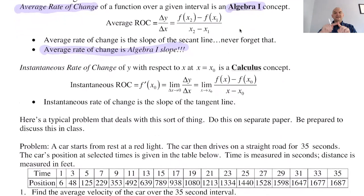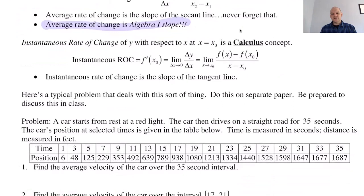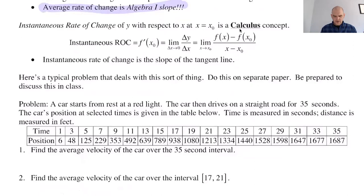Instantaneous rate of change is the rate of change at exactly one point — not on average over an interval, but at one point. That's a calculus concept. To find it, we take the limit of the slope of the secant line. Instantaneous rate of change is what I call calc one slope; it's the slope of the tangent line.